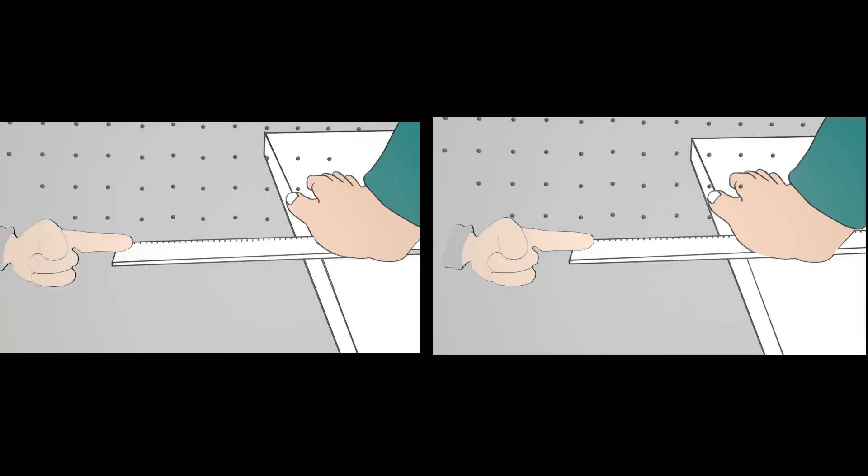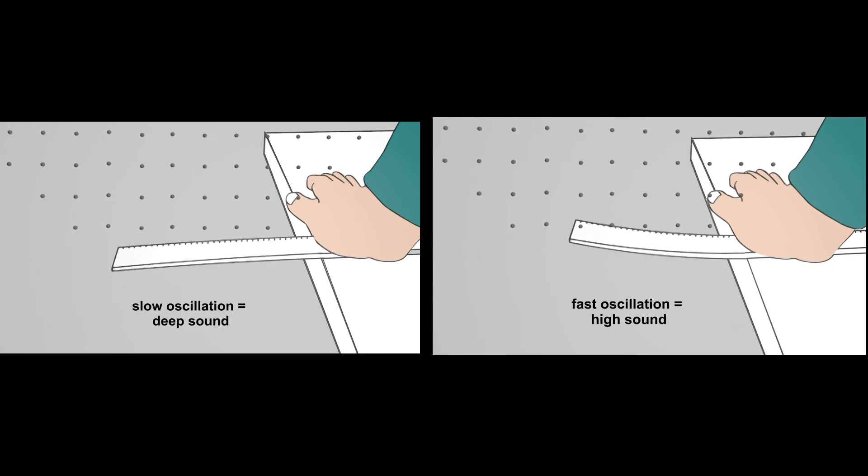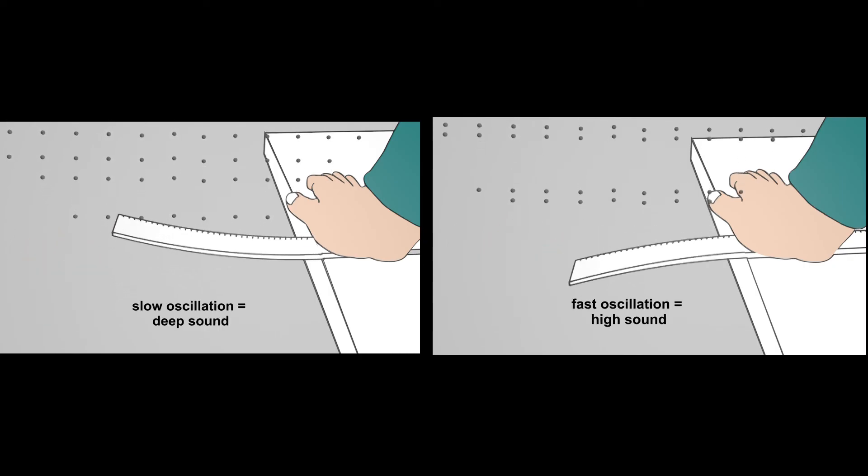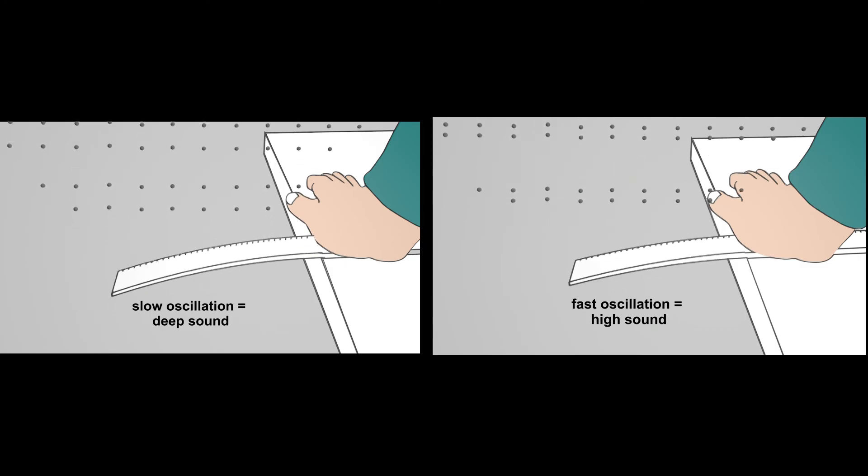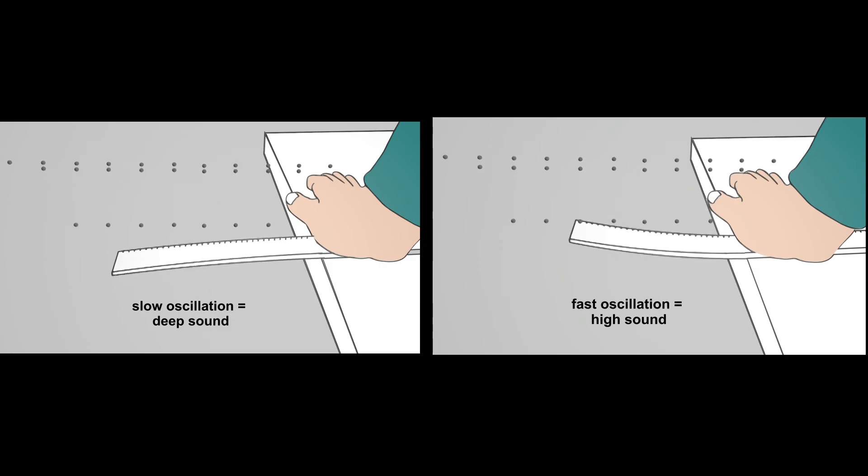Let's look at this again in direct comparison. You can clearly see that the ruler with the shorter overhang swings back and forth faster. A slow oscillation means a deep sound and a faster oscillation means a higher sound.